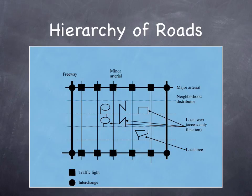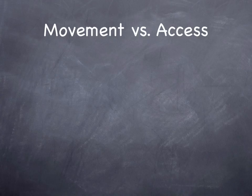Here we see an idealized map of an area illustrating different layers of the hierarchy and how they interact. The freeway is at the top of the hierarchy. There are major arterials which have freeway interchanges. They themselves intersect other major arterials and minor arterials. The minor arterials connect to neighborhood distributor roads, and those connect to neighborhood traffic collectors. At the bottom of the hierarchy, roads may be arranged like a tree and not interconnected at all.